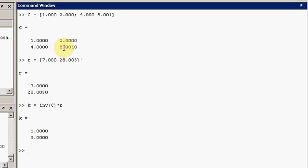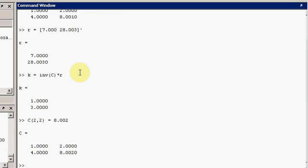Let's change the value here from 8.001 to 8.002. So that's on the second row in the second column. So C(2,2), instead of 8.001, let's make it 8.002. So the matrix has changed slightly. And let's ask for our new estimate for the kinetic rate constants.